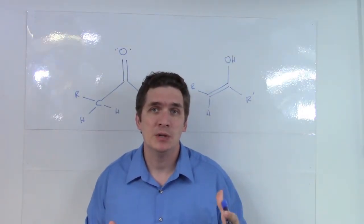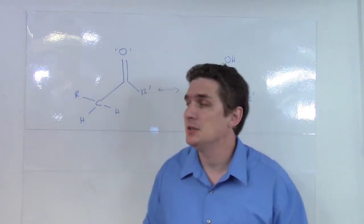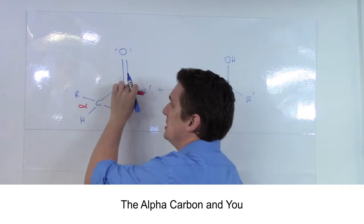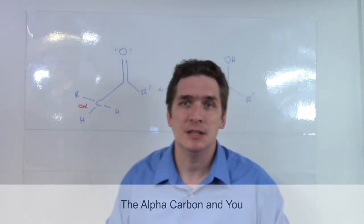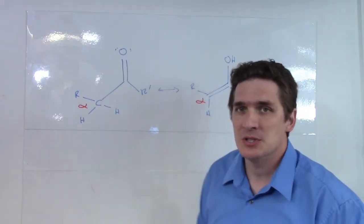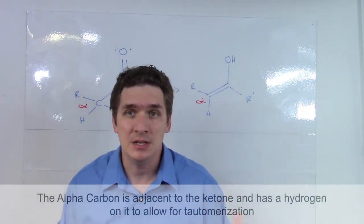The big thing we need to talk about with ketones with regard to enols is the alpha carbon. The alpha carbon is the carbon adjacent to the carbonyl carbon in the ketone and will ultimately be the one we form the double bond with when we undergo tautomerization to form the enol.